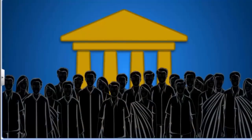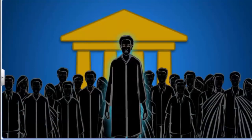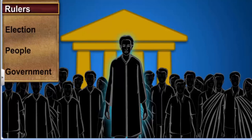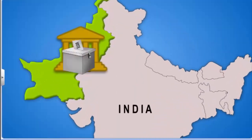In the previous chapter, we discussed a simple definition of democracy: democracy is a form of government in which the rulers are elected by the people. Let's first analyze the word 'rulers.' Pakistan had a democratically elected government till October 1999, when General Pervez Musharraf led a military coup.